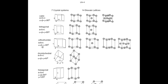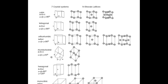The third is orthorhombic: A is not equal to B, which is not equal to C — the three sides have different lengths — but all angles are the same: alpha equals beta equals gamma equals 90 degrees. The fourth is rhombohedral: A is equal to B is equal to C, but alpha and beta are the same while the third angle differs from 90 degrees.